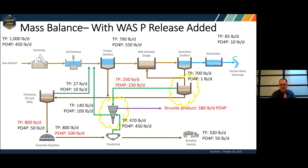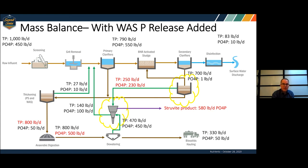With something like a WASSTRIP process, you take your WAS and send it to a phosphorus release tank. Now you've got two different streams going to your struvite recovery process: one from the WAS and one from the filtrate. This increases the amount of struvite you're pulling out — the highest amount we've seen in these examples. Because you're pulling more out, you get benefits all over the plant: lower secondary influent levels, lower digester levels, and lower levels hitting your dewatering process.